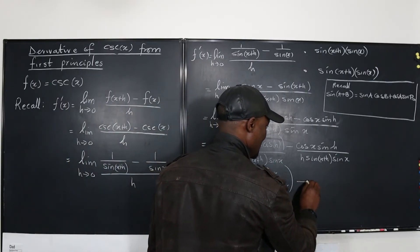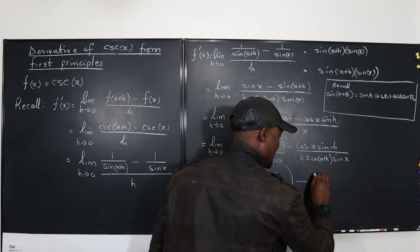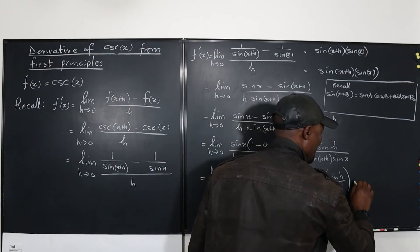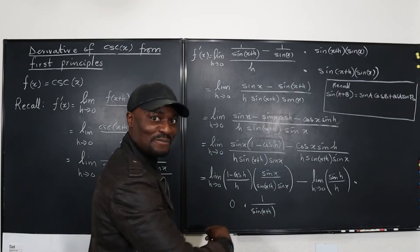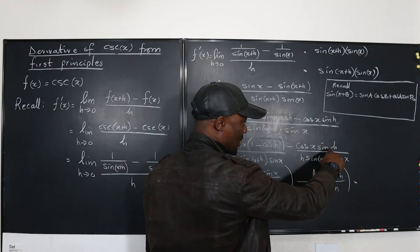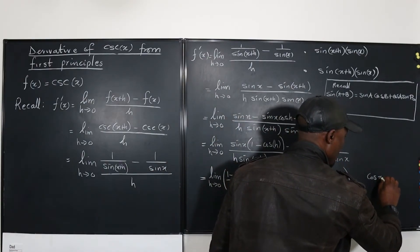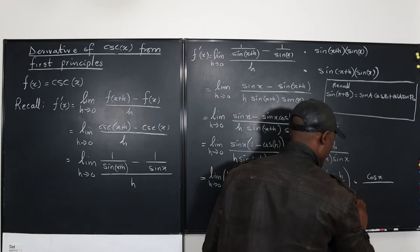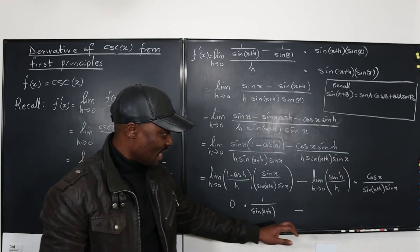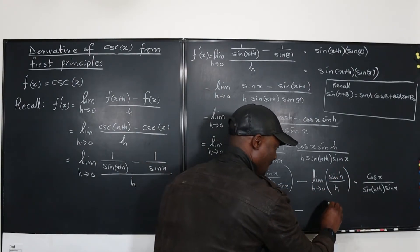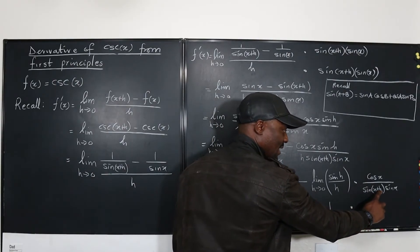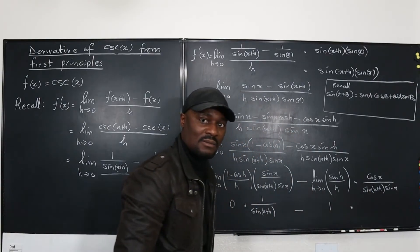For the second term, I write [sin h / h] multiplied by [cos x / (sin(x+h)·sin(x))]. As h goes to zero, sin h / h goes to one — that's a standard limit. And sin(x+h) approaches sin x as h goes to zero. So this term becomes 1 times cos x over sin x·sin x, which is cos x over sin²x.